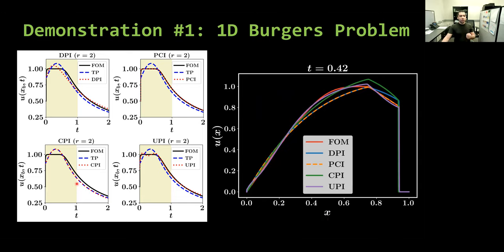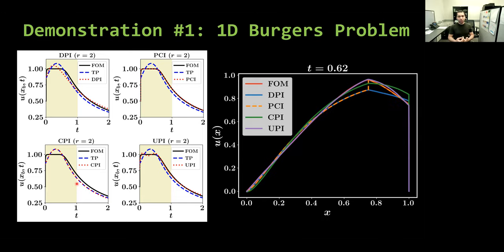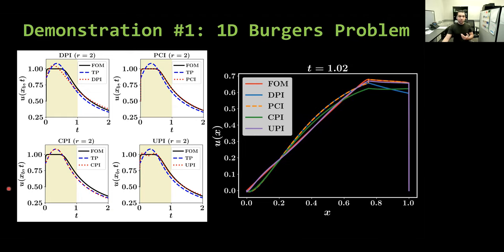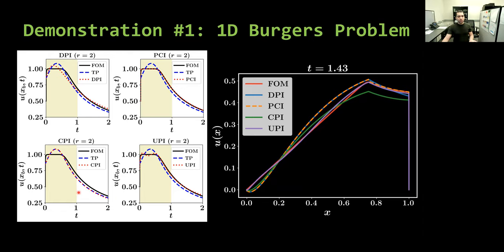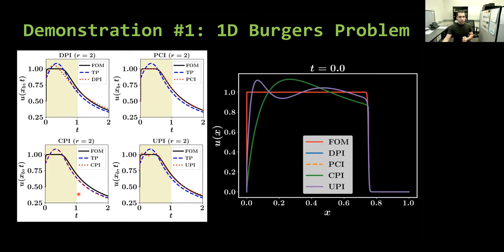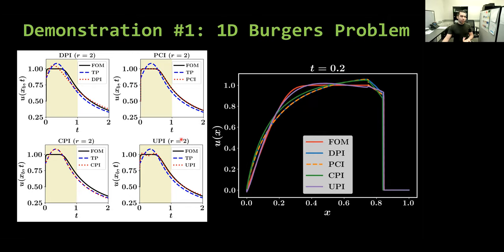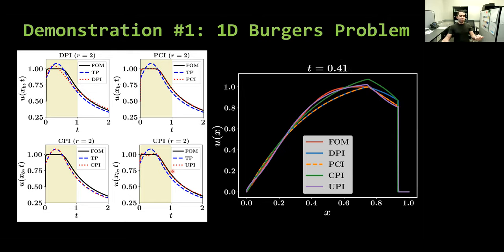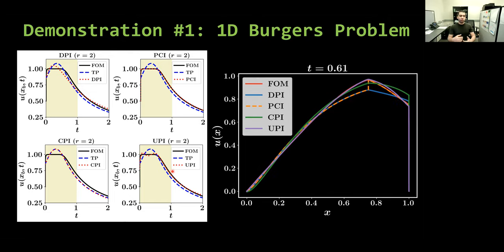Here, CPI is the correction in the low-order space, which mainly takes care of the closure error. We see that it is almost matching the TP or the true projection, which is the optimal information or maximum information that we can get from phi basis. Finally, in UPI, we add correction and super-resolution. So we have information from phi and psi. So we have some super-resolution.